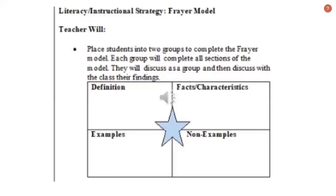The second strategy that I implemented was the Fray model. A Fray model is a model of concept learning that includes examples and non-examples. It includes the definition, the facts or characteristics, examples of the topic, and non-examples of the topic.